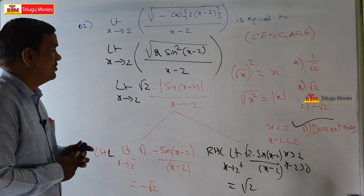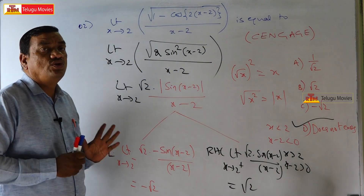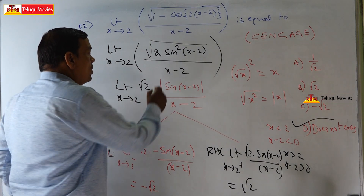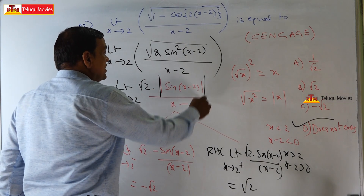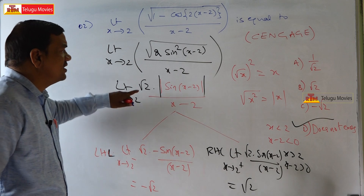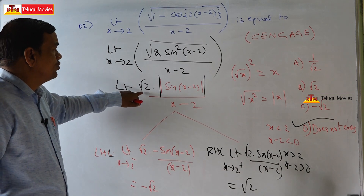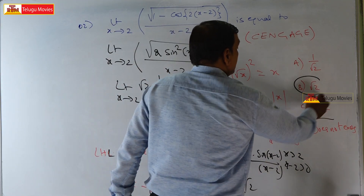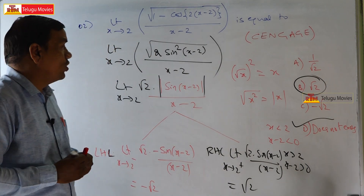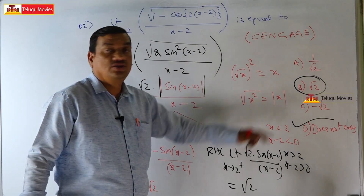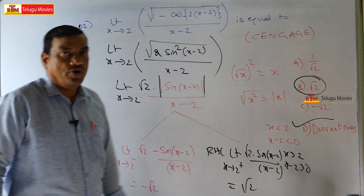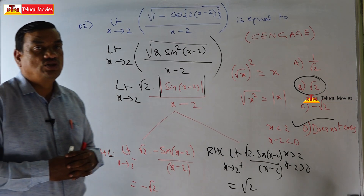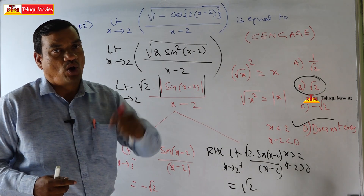This is a very easy problem. The only thing to remember is that you must keep the modulus. Otherwise, majority of students write the answer as √2. If you don't know that √(x²) = |x|, you will make that mistake. I hope you understand this solution. Let us go to the next problem.